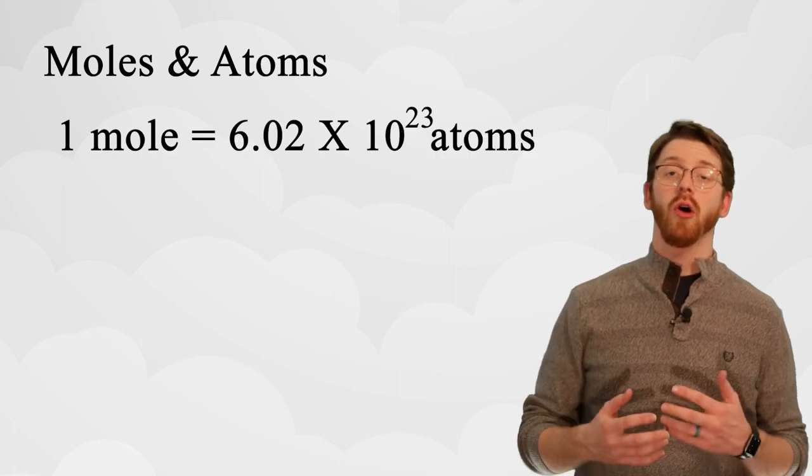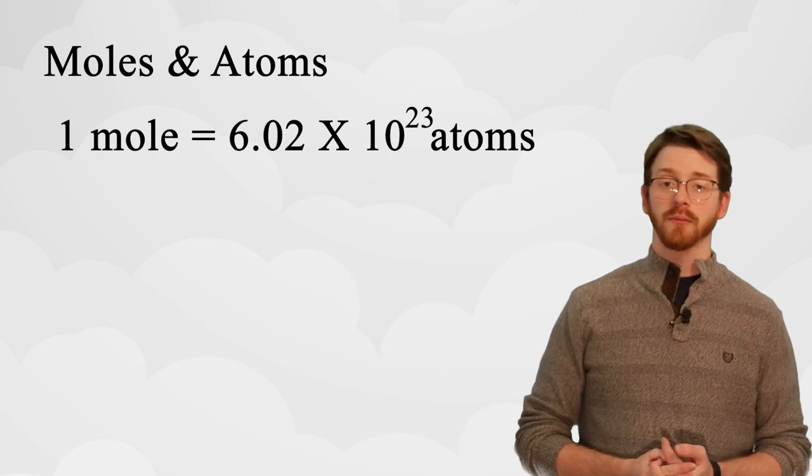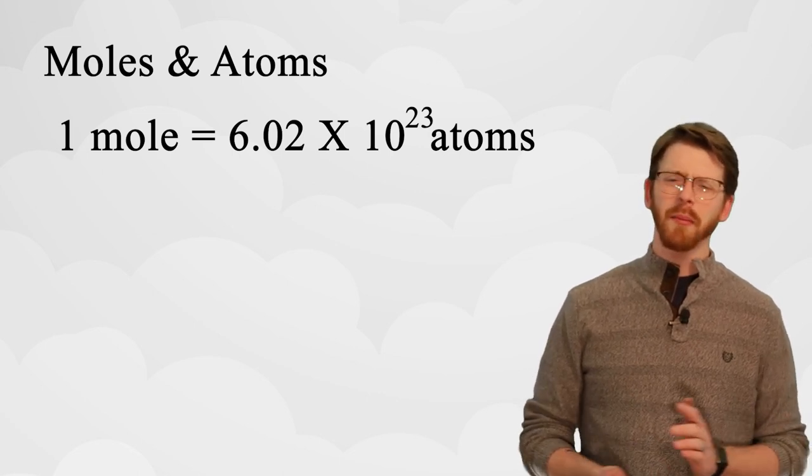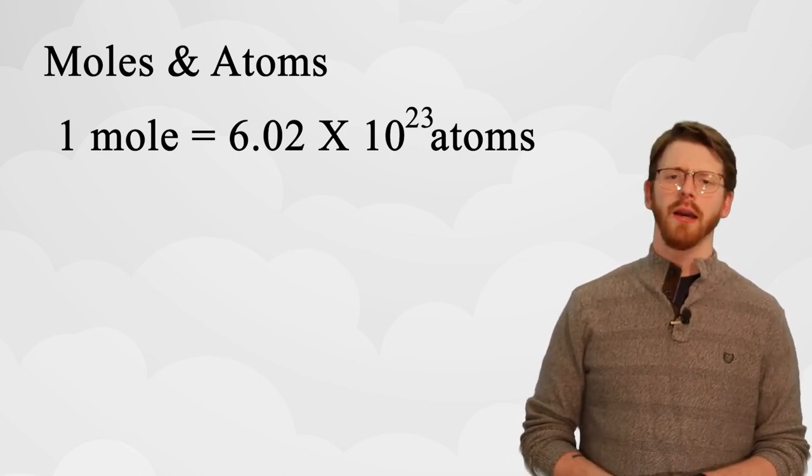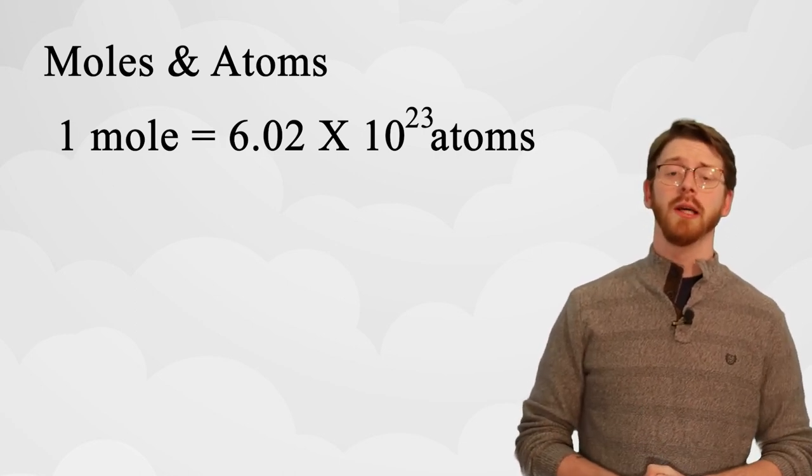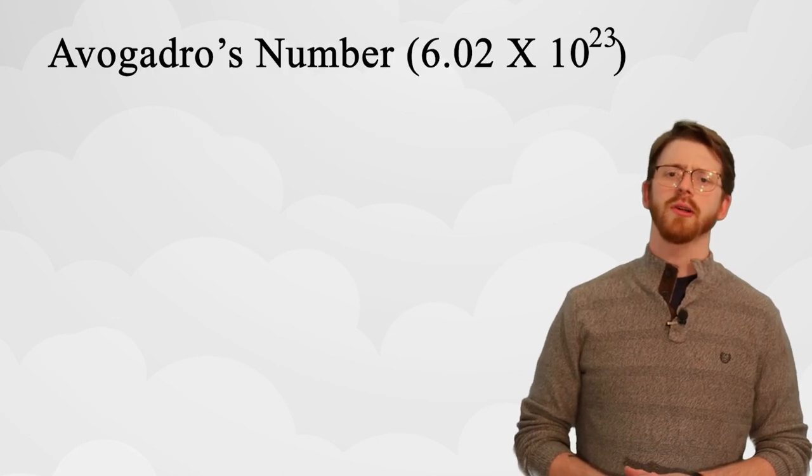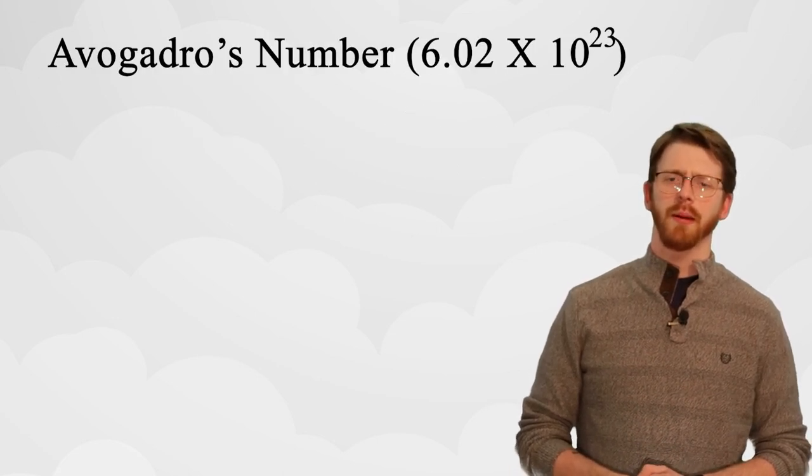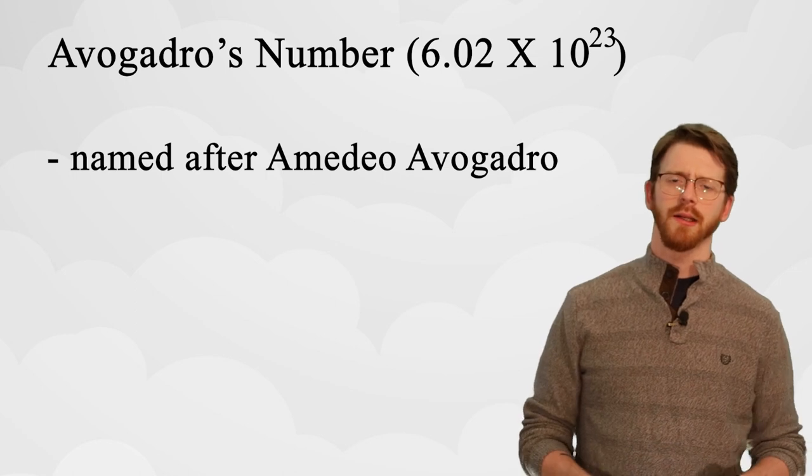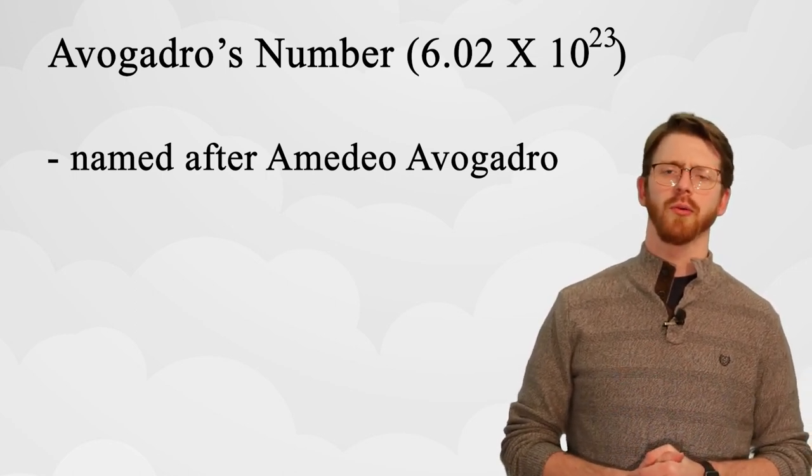Now when it comes to moles and atoms, there is always 6.02 times 10 to the 23rd atoms in one mole. It doesn't matter what the compound is. If you have one mole of anything, you have 6.02 times 10 to the 23rd of that substance. This number is called Avogadro's number, named after the famous scientist, and you will become very comfortable with using it as we go through the rest of this course.